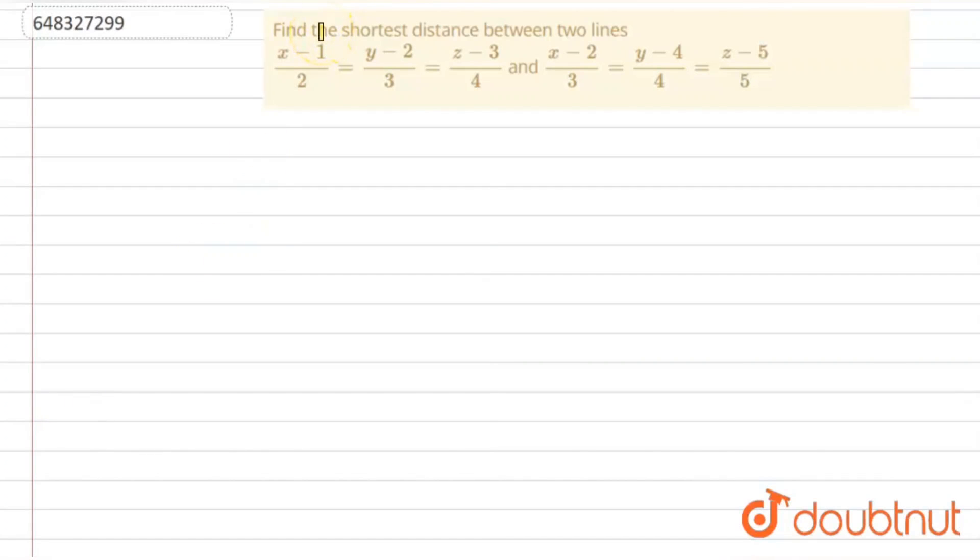we are going to solve this given question. Here given that find the shortest distance between two lines. So two straight lines are given, we have to find the shortest distance between them. So given straight lines are